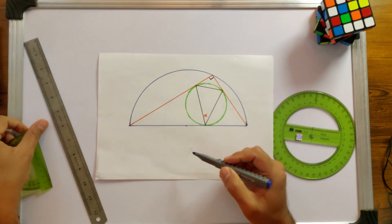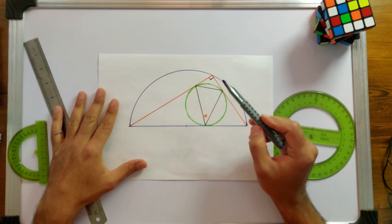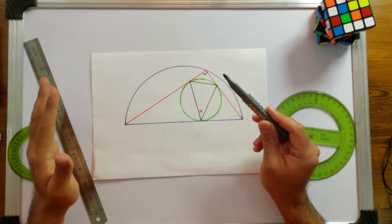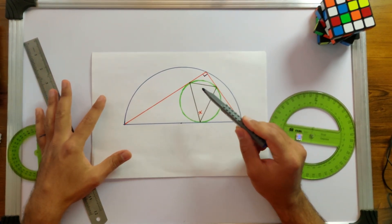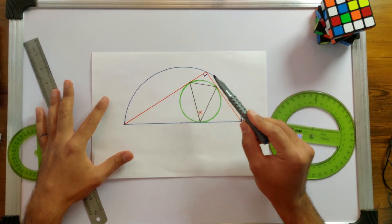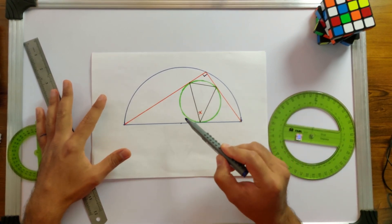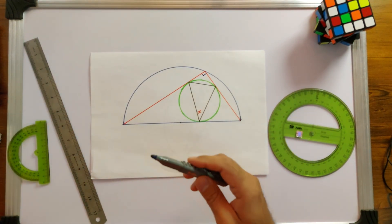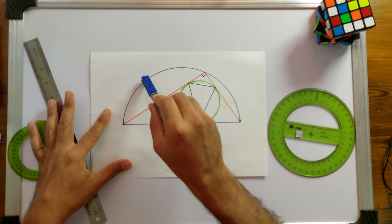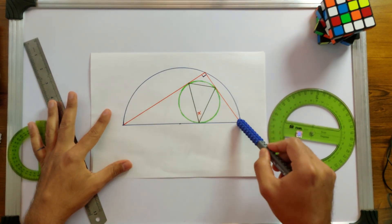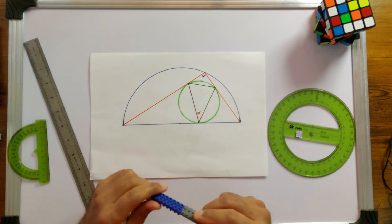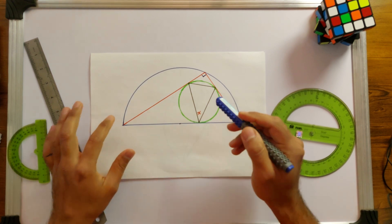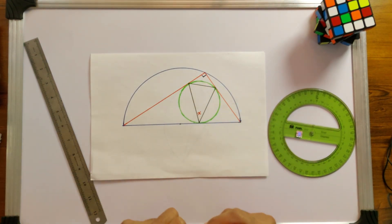It doesn't matter at which point on the circumference we draw this triangle — the angle at the circumference is always 90 degrees. So if there is a semicircle and you draw any triangle inside it with the diameter as one side, that triangle is always a right-angle triangle. So we know this is a right-angle triangle.